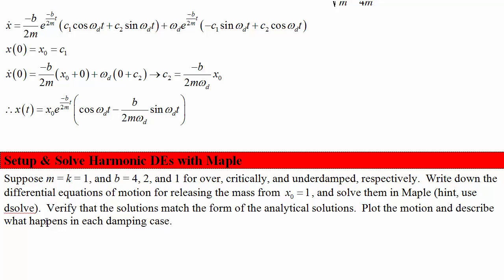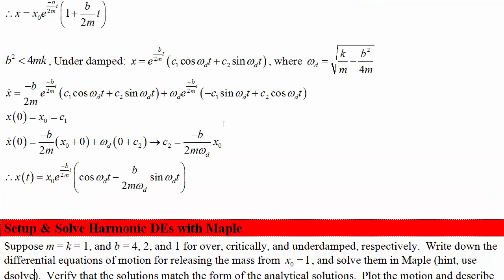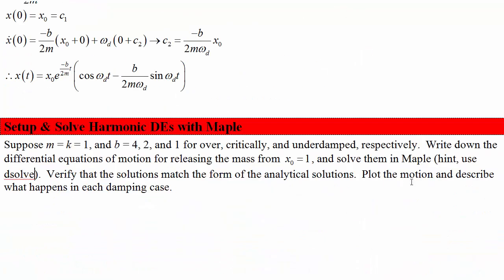Write down the differential equations of motion for releasing the mass from x0 equals 1 and solve them in Maple. A hint is to check out dsolve if you're not sure which function to use for that. Verify that the solutions match the form of the analytical solutions above and plot the motion and describe what happens in each damping case. This is more representative of a 2P04 problem.